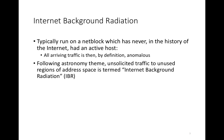Typically we'll run a network telescope on a net block or a network prefix or a collection of addresses which has never, at least in the history of the internet, had an active host. What this implies is that all traffic that arrives at this network telescope is by definition anomalous. Following the astronomy theme, we talk about unsolicited traffic to unused regions of address space as internet background radiation, or IBR.